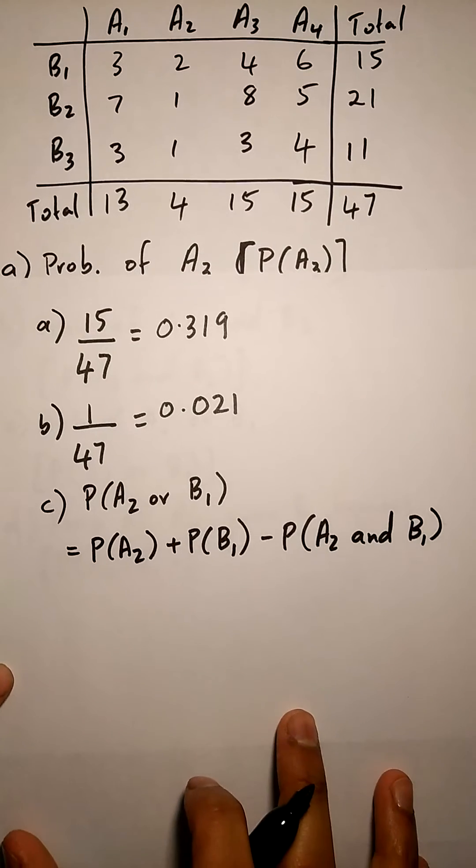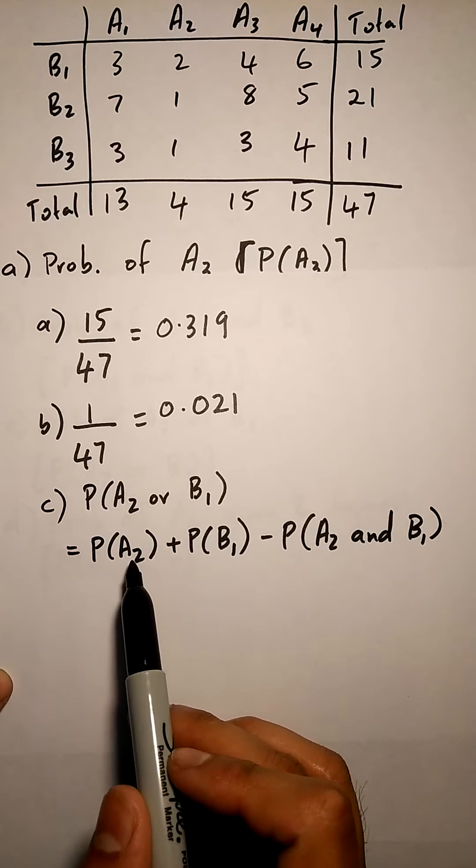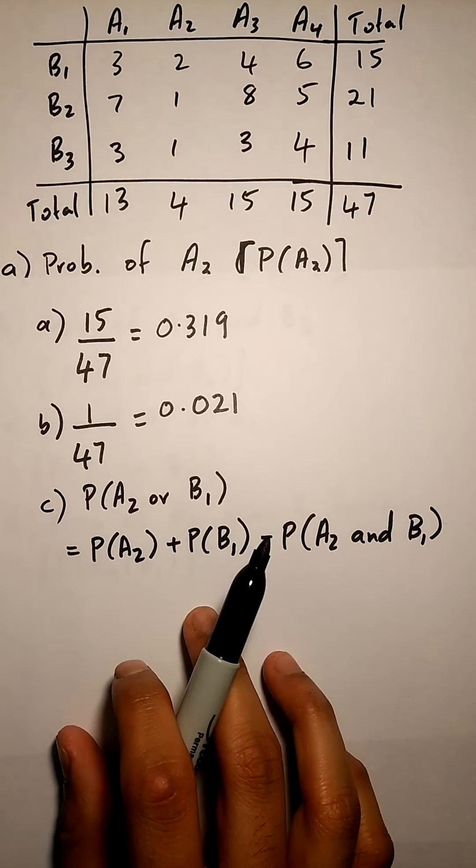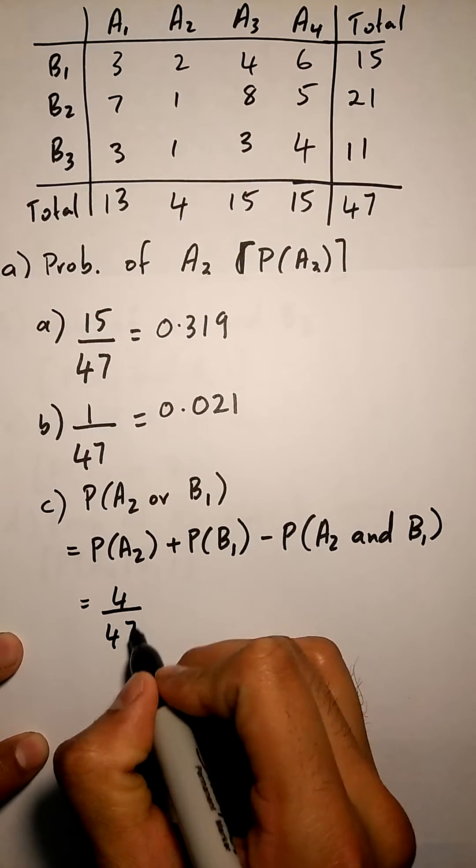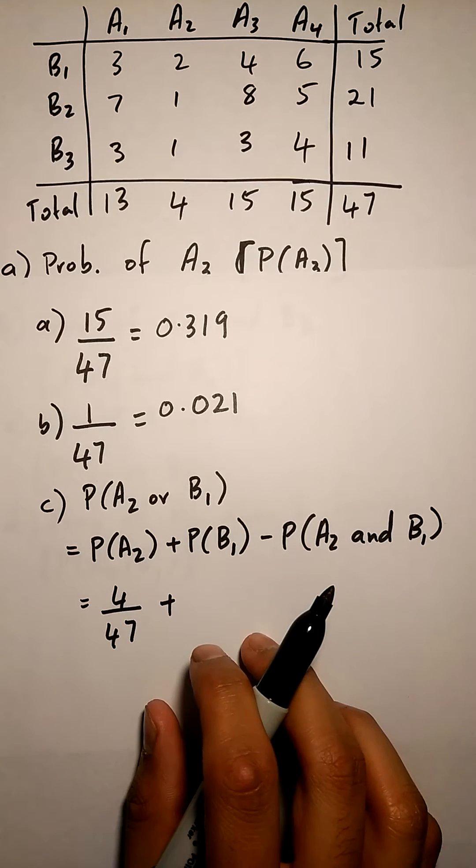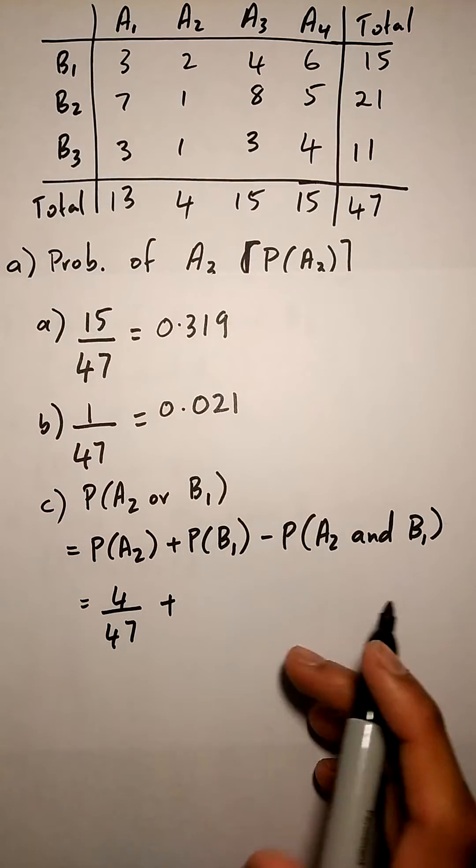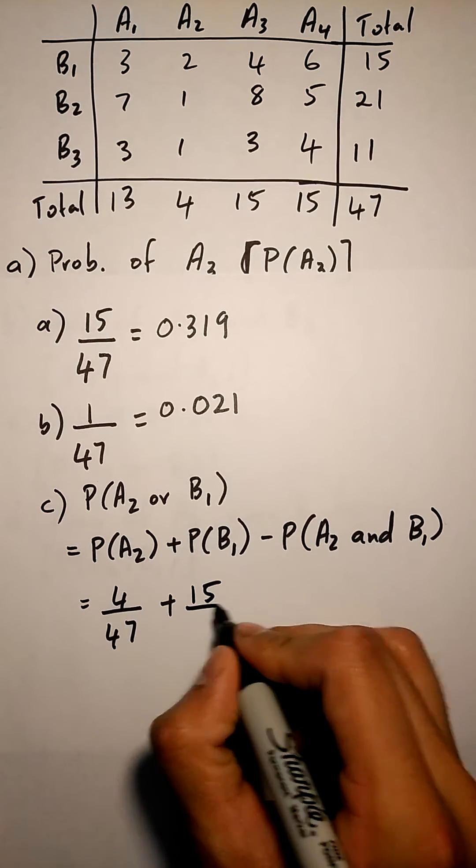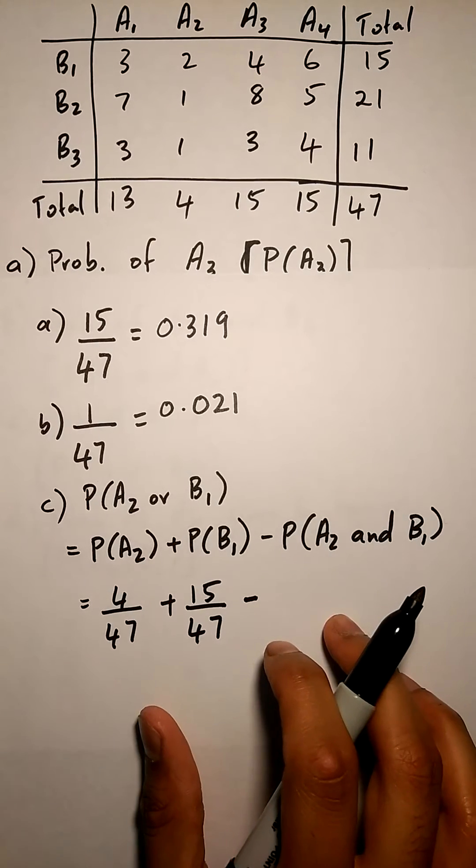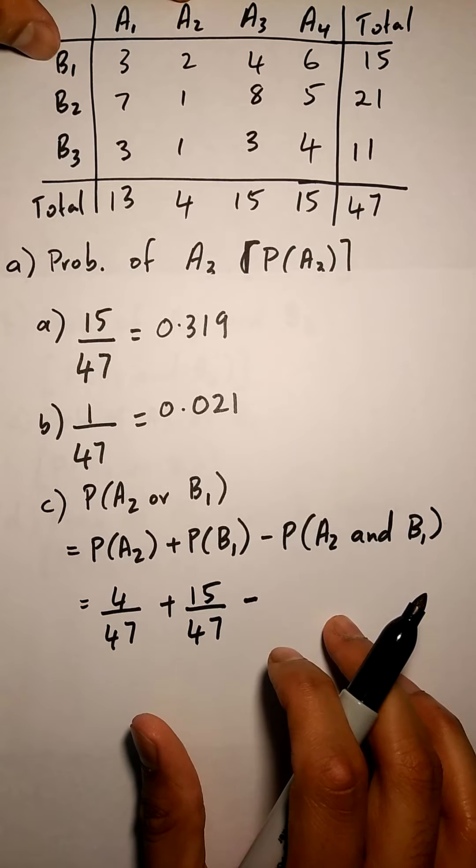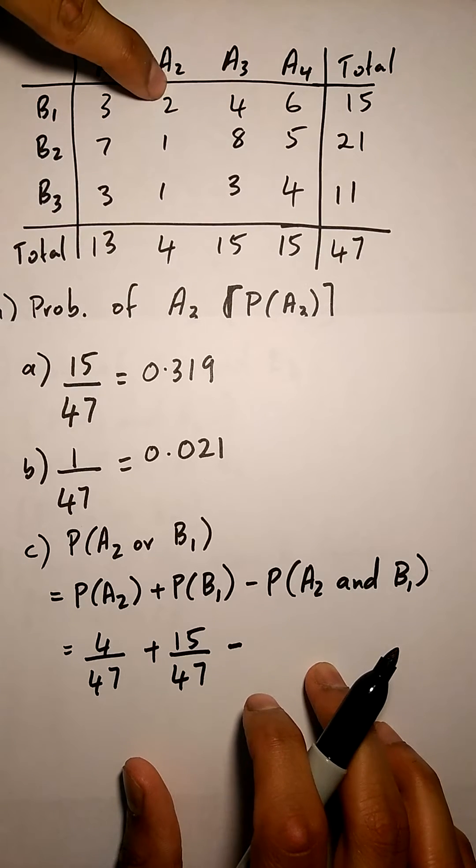We have to use our non-mutually exclusive formula. The probability of A2, if you look at our contingency table, is 4 divided by 47. Probability of B1, the total of B1 is 15, so that's 15 divided by 47. Then subtract the probability of A2 and B1. A2 is here, B1 is over there, they both intersect at the point 2, so that's 2 over 47.